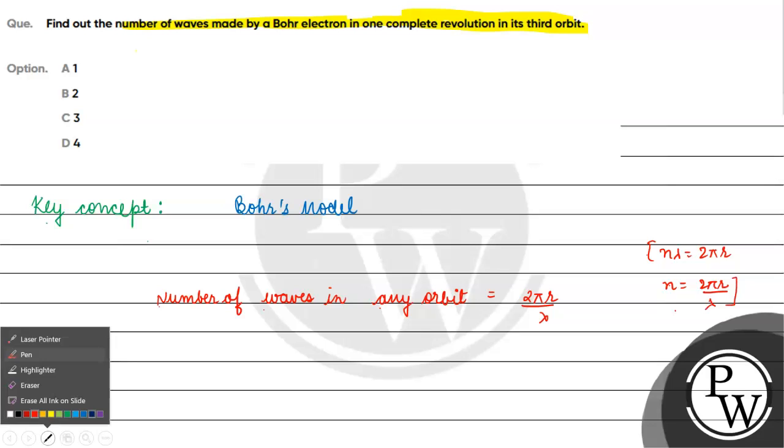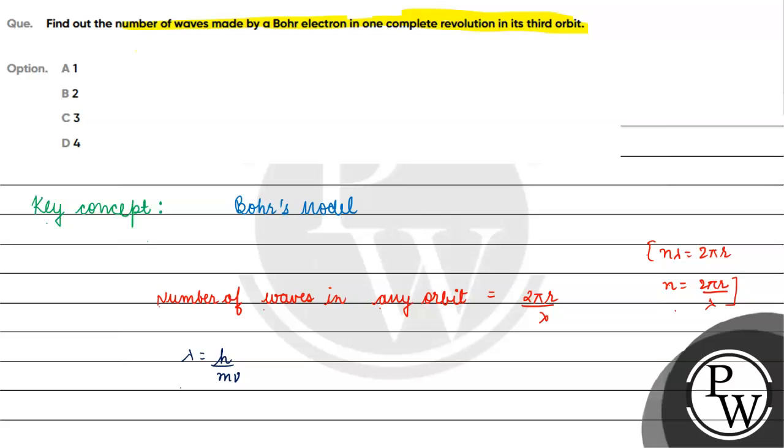Now, if we talk about here, we have given λ, which is equal to... We know λ equals h by mv. This is in accordance with de Broglie's relation. Lambda equals h by mv.